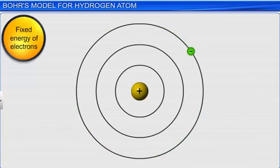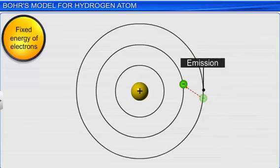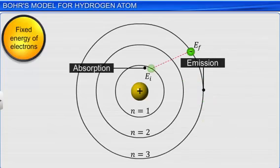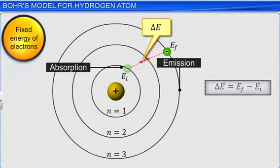So each emission or absorption of radiation energy represents the electron transition from one stationary orbit to another. The energy difference between the two orbits is given by equation delta E equals E final minus E initial.